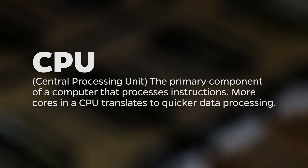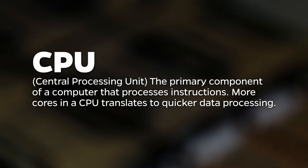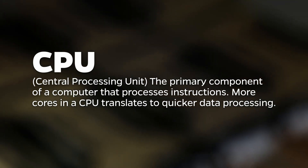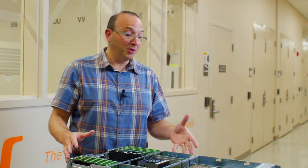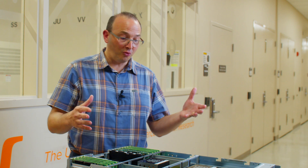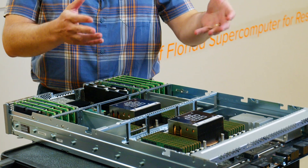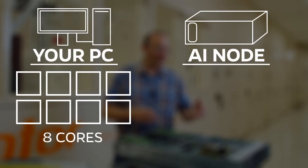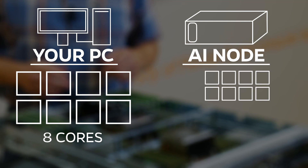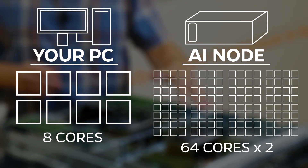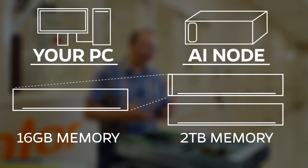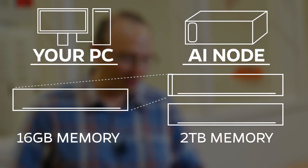So this is the CPU tray of the DGX node. This box is kind of like what your main computer would have at home. Your computer would probably only have one CPU that may have eight cores — these days that's fairly standard for a desktop. So these CPUs have 64 cores and we have two of them and two terabytes of memory. Your computer may have 16 or 32 gigabytes of memory. These have two terabytes of memory.